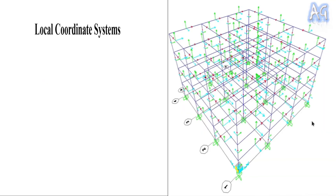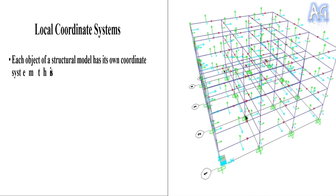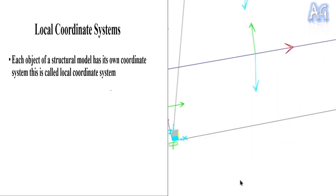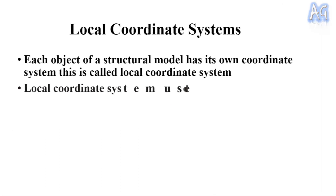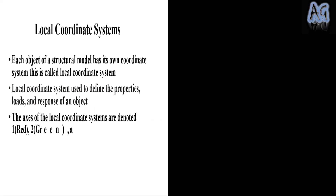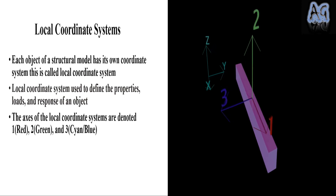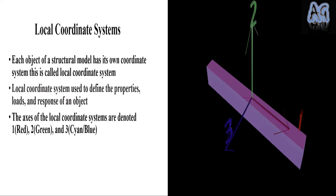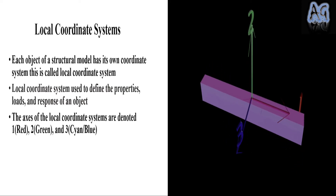In a structural model there are many objects, and each object has its own coordinate system — this is called the local coordinate system. The local coordinate system is used to define section properties, loads, and also to represent the response of an object. The axes of the local coordinate system are denoted 1, 2, and 3, and the colors of these axes are red, green, and cyan (blue) respectively.